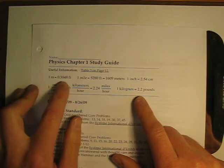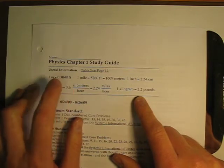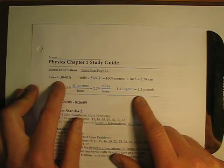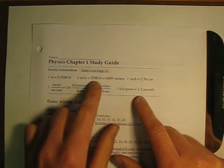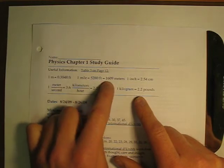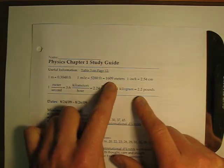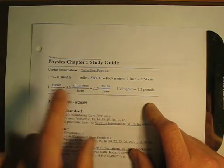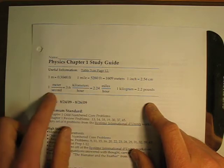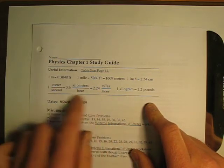One meter is 0.3048 feet. That's a good one, converting meters to feet. You've got one mile is 5,280 feet, or is approximately 1,609 meters. One inch is 2.54 centimeters. Right down here, miles per hour, meters per second, kilometers per hour.